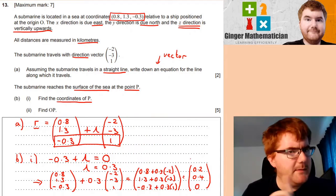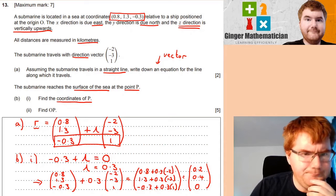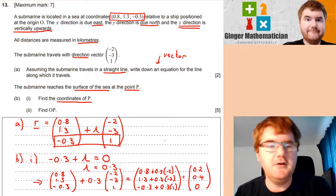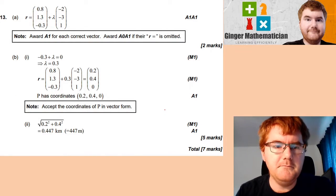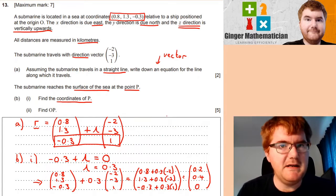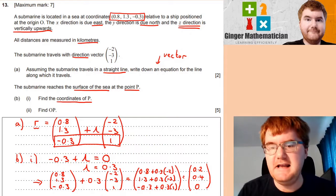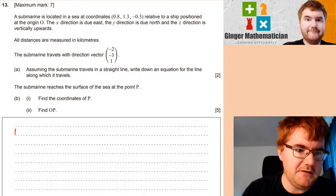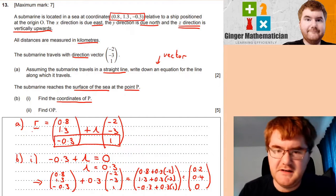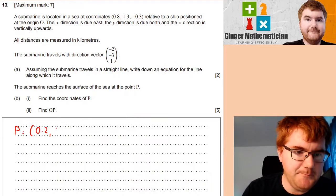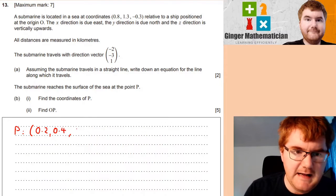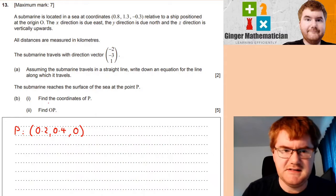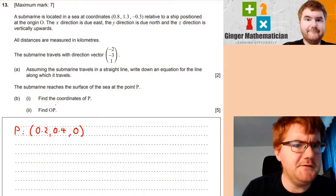Now, I think if I remember the mark scheme, you would still get marks for writing this. But they want a coordinate. So strictly speaking, we need a coordinate here. This is not a coordinate, this is a vector. So we need to write very clearly that P, the coordinate of it is (0.2, 0.4, 0). So that's the coordinate, not the vector. It's good to be very precise with these things.